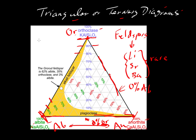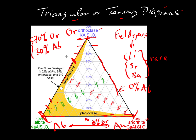Let's plot a couple of points. Let's say we have a mineral that is seventy percent orthoclase and thirty percent albite — where would that fall? The sum is a hundred percent with no anorthite listed, so it would plot somewhere on the zero percent anorthite line, which is the orthoclase-albite join. Looking at the contours for albite — ninety, eighty, seventy — thirty percent is this contour here. That also hits the seventy percent contour for orthoclase, so this mineral plots right at that point.